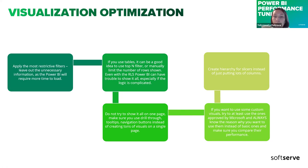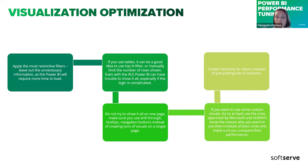The last point — but not least — is to create a hierarchy for slicers instead of putting lots of individual columns. If you know that data is interconnected and works as a hierarchy in real life, make sure you create a hierarchy in Power BI. Otherwise, Power BI will take longer to visualize every column as it checks whether they are interconnected. If you know it's a hierarchy, just tell Power BI it's a hierarchy — so Power BI does less work.